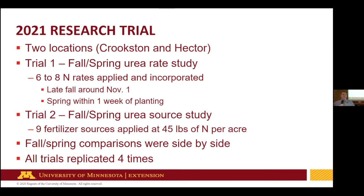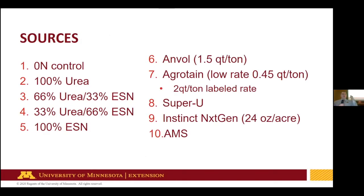Trial two is a fall-spring study where we're looking at nine fertilizer sources and a non-fertilized control applied at 45 pounds. We used 45 pounds because we wanted a rate that could produce a yield increase but wasn't at maximum response — we need to be at a suboptimal rate to sort out between products. And 45 is divisible by three, which you'll see why that matters. Everything was replicated four times.